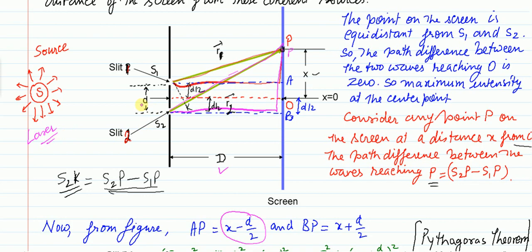We have a monochromatic source S, basically a laser light source. The light travels towards slit S1 and slit S2. These two slits act as secondary sources represented by S1 and S2. The distance between them is small d, and O is the center point between the two slits on the screen. The distance from S1 to the center point is d/2, and same for S2, so total distance is d.